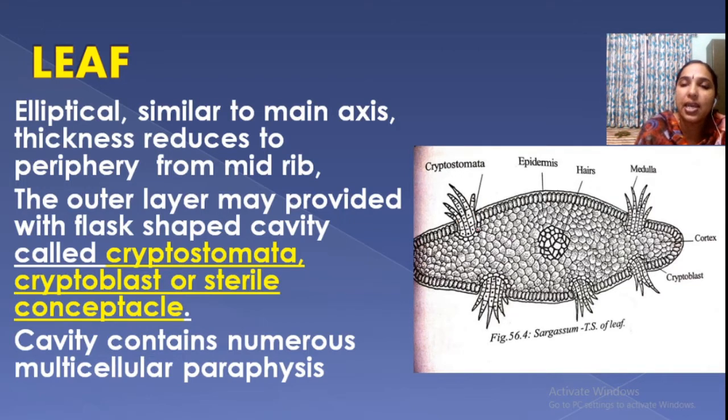Cryptostomata, also called cryptoblasts or sterile conceptacles, contain a cavity. That cavity bears numerous hairs known as paraphyses.